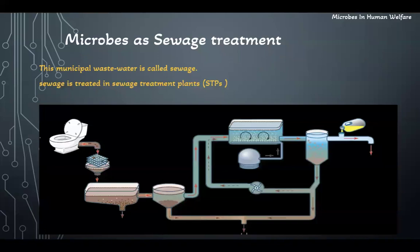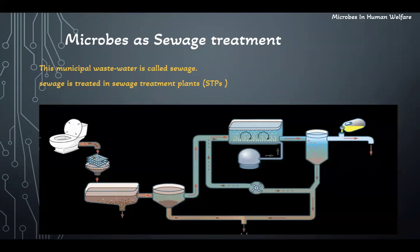In sewage treatment, first of all, what is sewage? Sewage is the household water released, especially the water from toilets and washing areas. Whatever water is released from every house in a city or town is collectively collected at a place for purification, because we cannot release this water directly into water bodies.